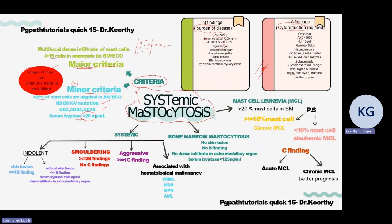In mast cell leukemia, blasts are more than 20 percent in the bone marrow. In peripheral smear, normally we don't see mast cells — if more than 10% are seen it is classic mast cell leukemia; less than 10% is aleukemic mast cell leukemia. Based on C findings: if present, it is acute mast cell leukemia; if absent, it is chronic mast cell leukemia with better prognosis. Bone marrow mastocytosis has no skin lesion, no B findings, serum tryptase less than 125 ng/mL, and no dense infiltrate in any extramedullary organ.